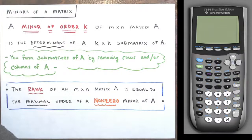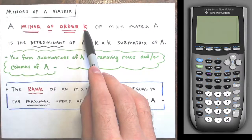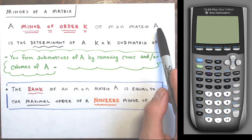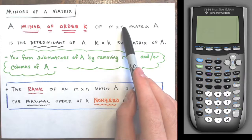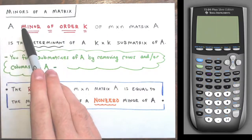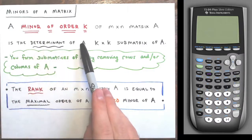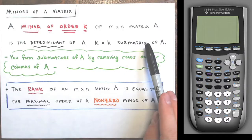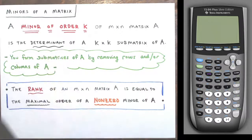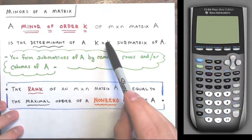So I'm starting off by defining what I mean by minors of a matrix. A minor of order k of an m by n matrix A — suppose we're given an m by n matrix A, m rows and n columns, and I say find some minors of order k. Well, a minor of order k is the determinant of a k by k submatrix of matrix A. In order to find the determinant, you can only take determinants of square matrices, which is why this is k by k.